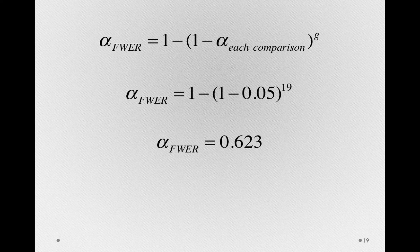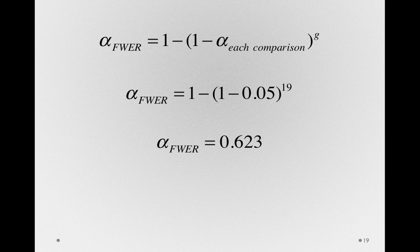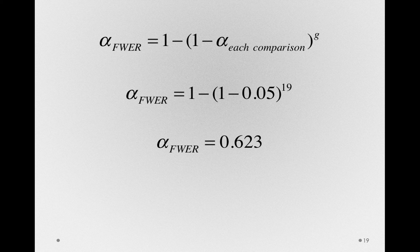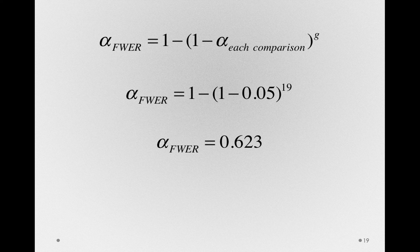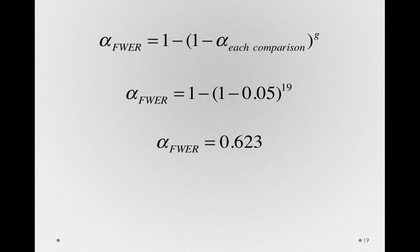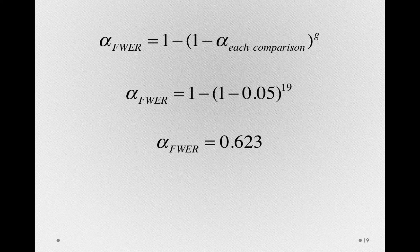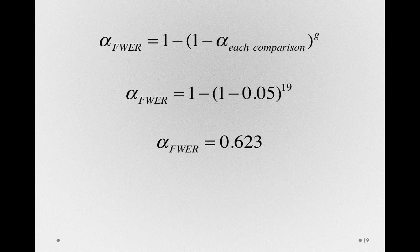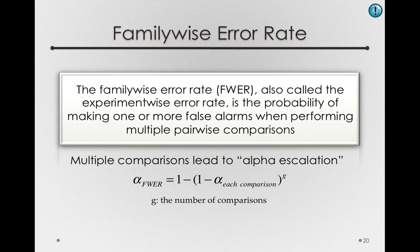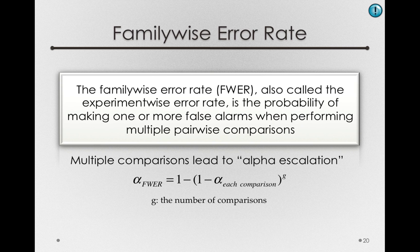In this case, it is 0.623. That is, if the null hypothesis is true, and we run 19 tests at alpha of 0.05, the probability we'll make at least one false alarm is 0.623, considerably higher than what we would imagine given that we're doing tests at alpha of 0.05. And this is alpha escalation. Multiple comparisons simply lead to alpha escalation because we have multiple opportunities to make a false alarm.